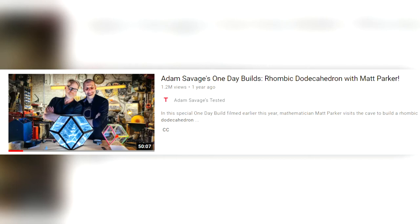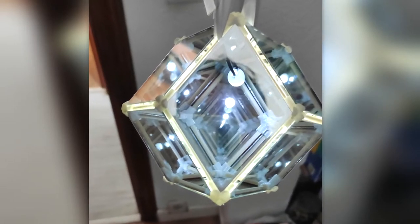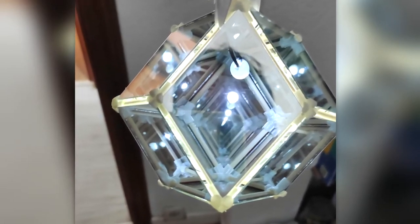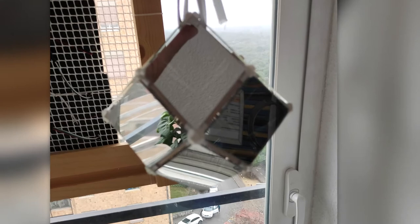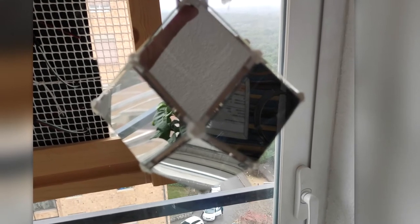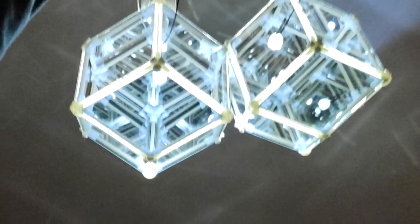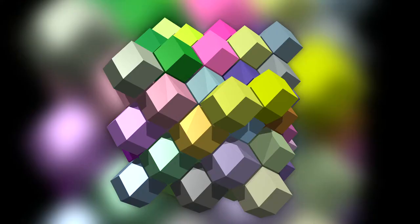Inspired by a video by Adam Savage and Matt Parker, I decided to make my own smaller version of an infinite rhombic dodecahedron. This particular polyhedron can tile three spaces, so it makes for a good choice for this type of lamp.